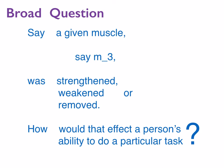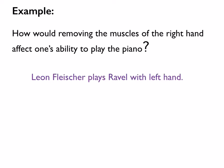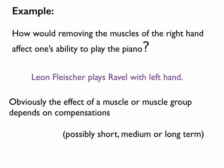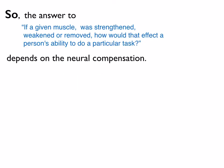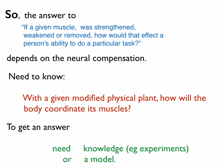The big question is: given a muscle — whatever one you want, let's say it's strengthened, weakened, or removed — how does that affect your ability to do a given task? For example, if you remove the muscles of your right hand, how would that affect your ability to play the piano? Here's Leon Fleisher playing with his left hand. So with compensation, you can do pretty well playing with just your left hand. The answer depends on compensation, and that might be a key issue. You need to know how the body will coordinate the muscles when muscles are changed. You need either real knowledge from many people, or you need a predictive model — and my claim is induced acceleration isn't that model.